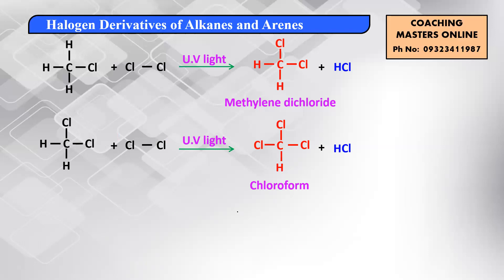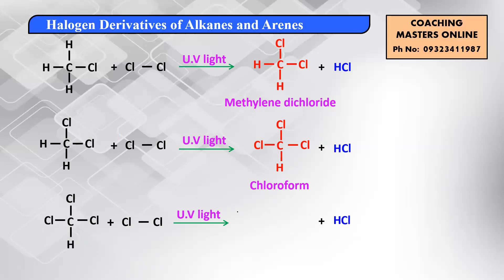With one hydrogen still remaining in CHCl3, treating it with another chlorine molecule under UV light gives HCl as a byproduct and CCl4 — carbon with all four chlorine atoms. So if chlorine is in excess, the reaction continues until all hydrogens are substituted. Methane has four hydrogens so four substitutions occur; ethane has six hydrogens so six substitutions would occur. To get mono-halogenation only, take alkane in excess and halogen in deficit.